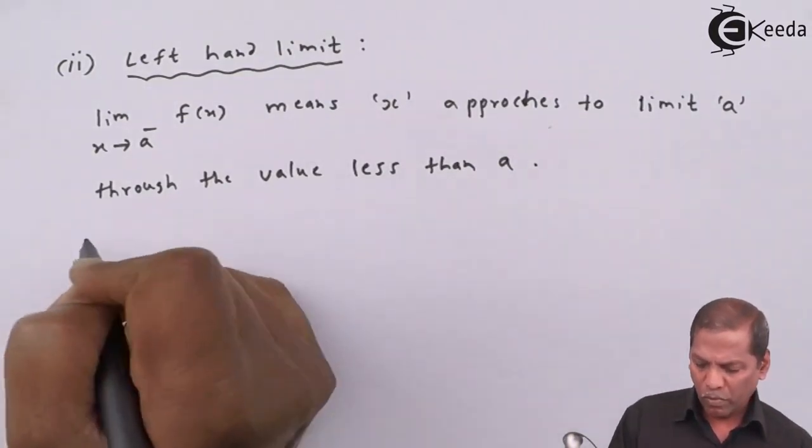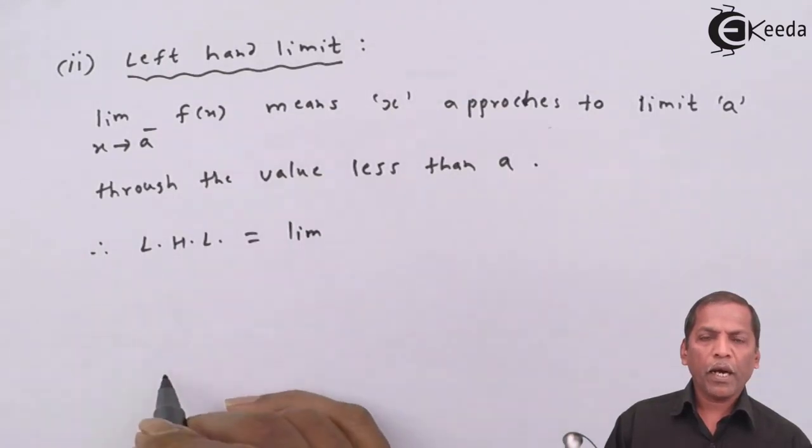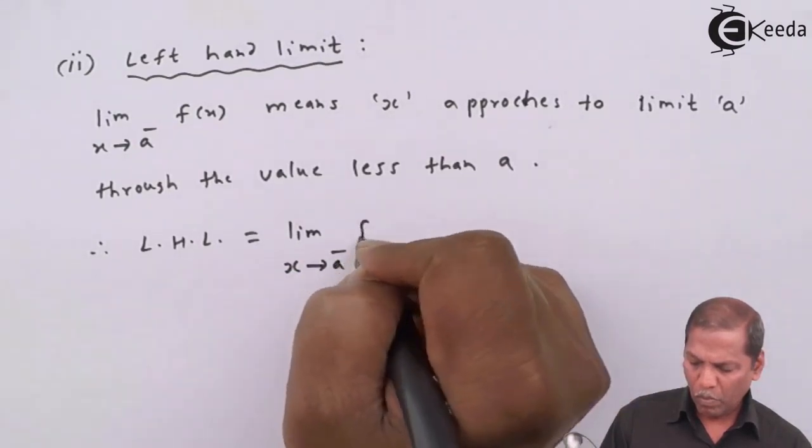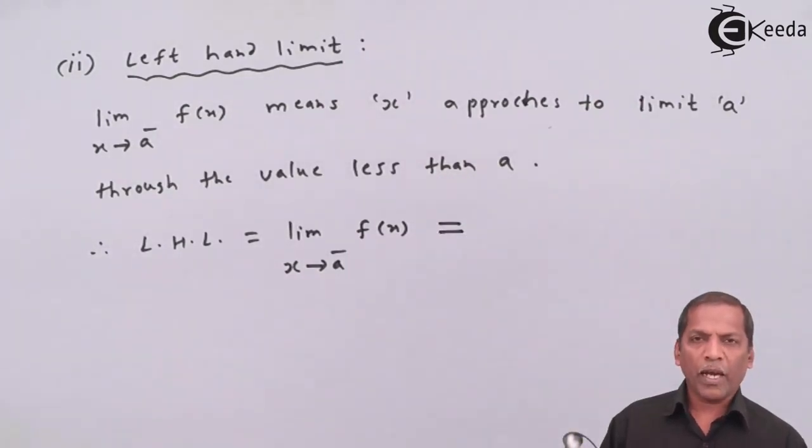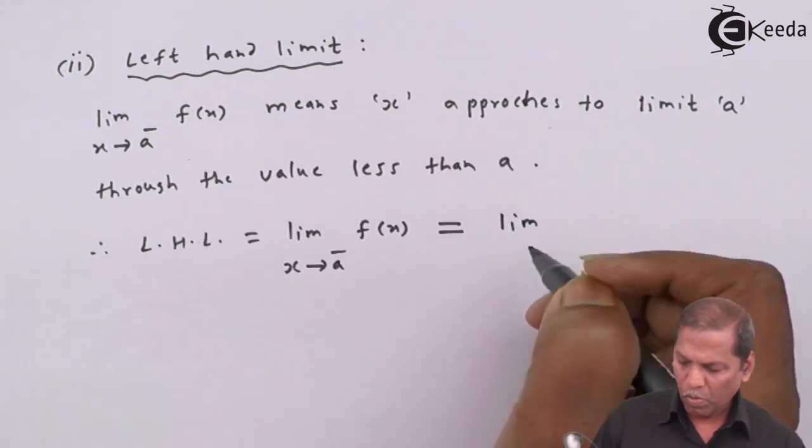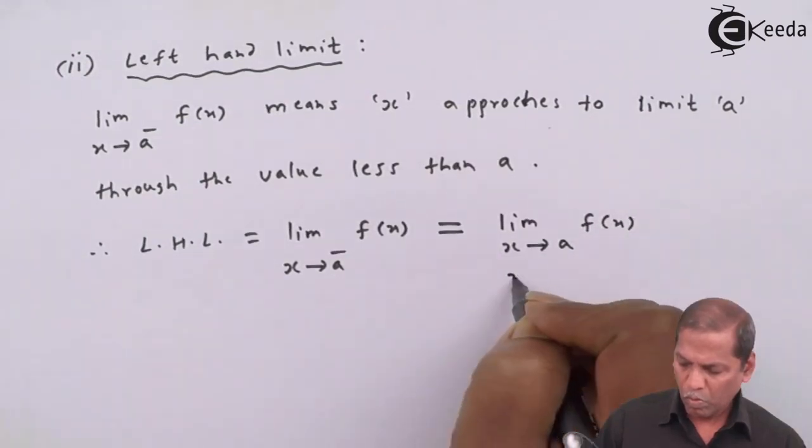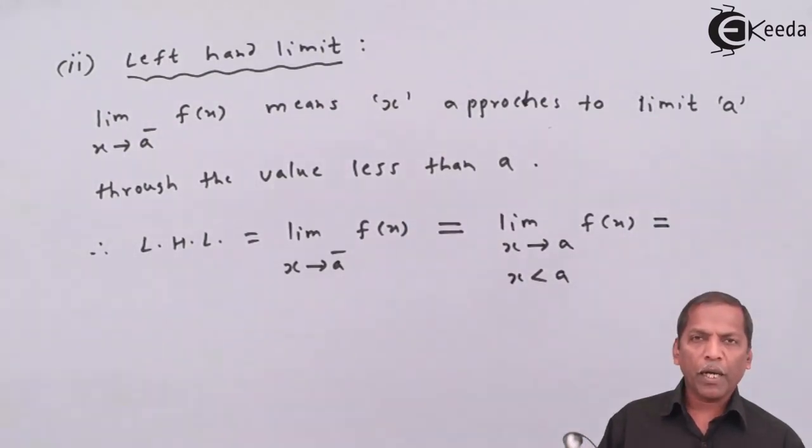Therefore, left-hand limit equals limit x tends to a minus f(x), which equals limit x tends to a f(x) where x is less than a, and that equals limit h tends to 0 f(a - h) where h should be greater than 0.